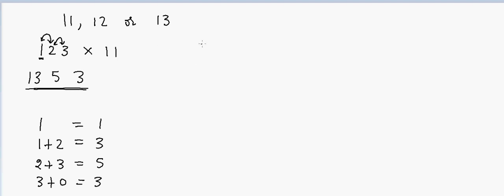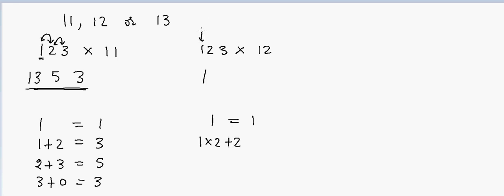Now how will I do the same for 12? If I have 1, 2, 3 and I want to multiply by 12, I first take the first digit and write 1. Then, to calculate the second digit of the answer, I take the first digit, multiply by 2, and add the second digit — so 2 times 1 is 2, plus 2 gives 4.